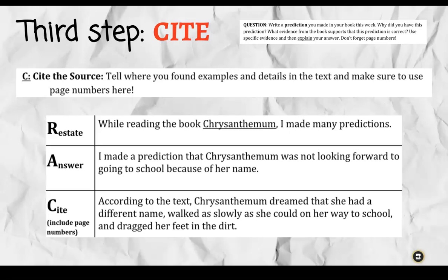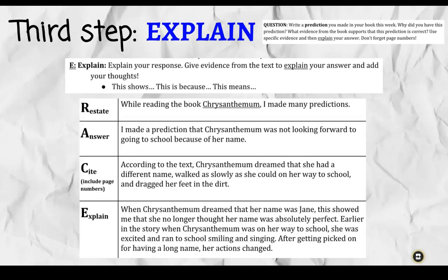Now we're going to take the next step, which is the most important step — Explain our evidence. 'When Chrysanthemum dreamed that her name was Jane, this showed me that she no longer thought her name was absolutely perfect. Earlier in the story, when Chrysanthemum was on her way to school, she was excited and ran to school smiling and singing. After getting picked on for having a long name, her actions changed.' In the Explain section, I was able to support each piece of evidence I chose to include, showing what it revealed as a good reader and explaining the character change.